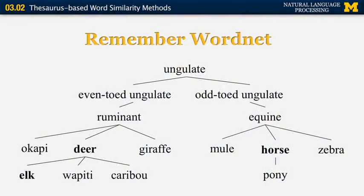According to this metric, elk and deer are very similar because there's only one hop separating them. The distance between deer and horse is much larger — we have to go from deer to ruminant, to even-toed ungulate, to ungulate, to odd-toed ungulate, to equine, and then horse. That's a total of six hops. So the distance from deer to horse is six, and the distance from deer to elk is one.